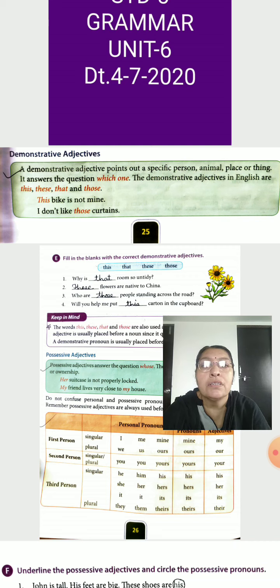This bike is not mine. They use here 'this'. This we use for singular. Here mention only one bike. Second example: I don't like those curtains. Here they give one example, curtains. So, use those. Curtains far from us, on the window. So, they use those.